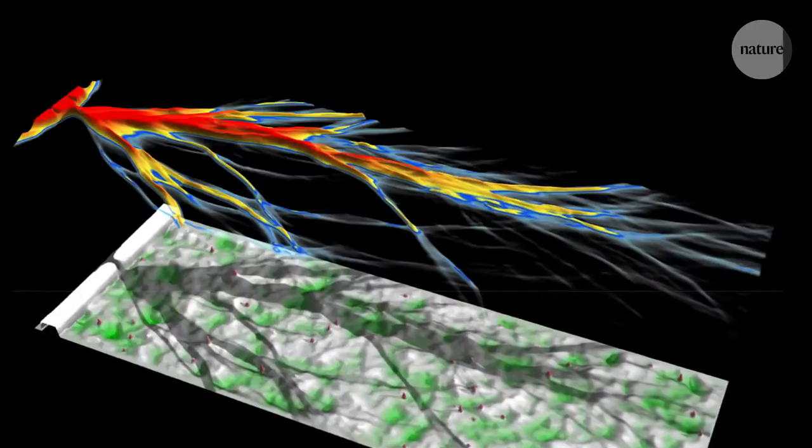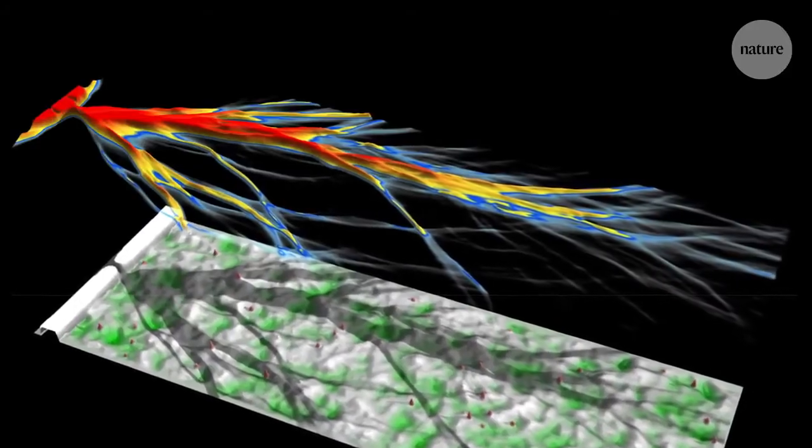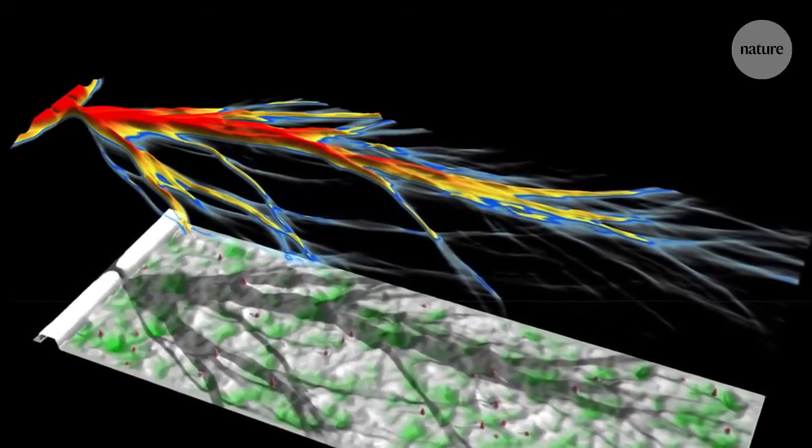For branched flow to occur, the medium's random structure must be larger than the wave's wavelength and has to vary smoothly in all directions.